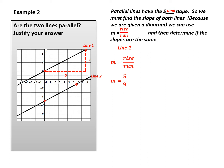I'm now going to do line 2, which is the lower line. Again, I need to know my rise. To go from my lower point to my higher point, I am going to go up 4. To go from my lower point to my upper point, my run is 7. So for line 2, using rise over run, my rise is 4 and my run is 7.